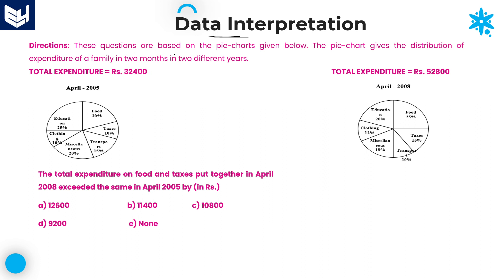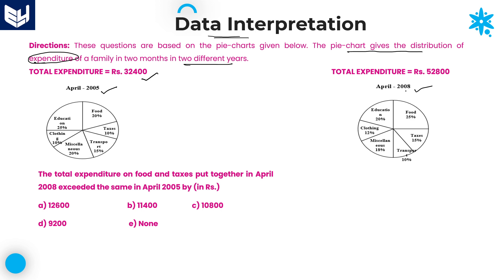These questions are based on the pie charts given below. The pie chart gives the distribution of expenditure of a family in two months in two different years. It is very easy to understand — here April 2005 and April 2008. The first pie chart is about April 2005, the second is about April 2008. Total expenditure in April 2005 is 32,400, whereas in April 2008, total expenditure is 52,800. These are the values provided in this pie chart.